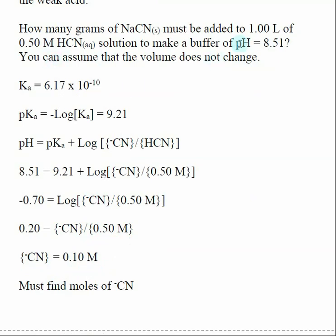So I know what my volume of my solution is, one liter, and I know what concentration I need to make my CN⁻, my conjugate base, it needs to be 0.1 molar. So now I've got to find how many moles and the corresponding number of grams of our sodium cyanide that we need to add.